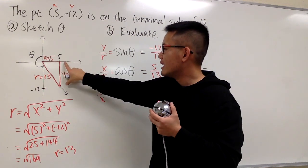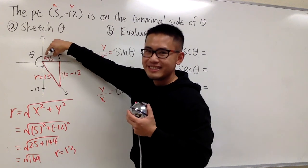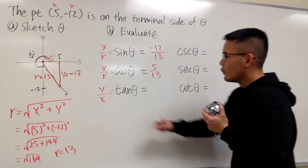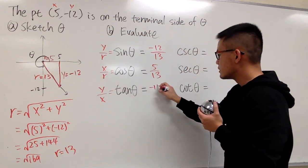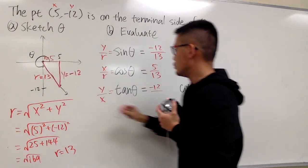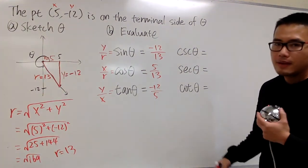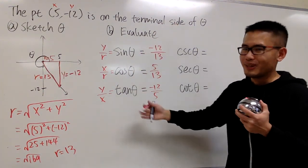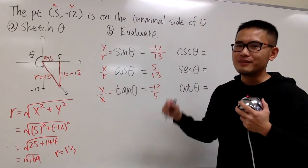It's just the same as opposite over adjacent, if you look at this as your reference angle. Anyways, y is negative 12 over x, which is 5. And this is pretty much it for the three famous ones, sine, cosine, tangent of the angle theta.